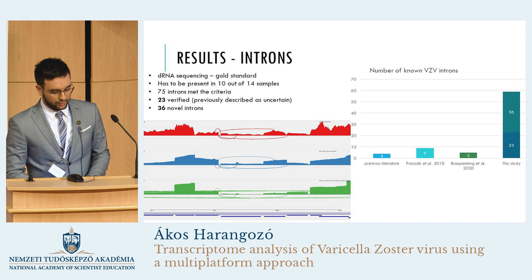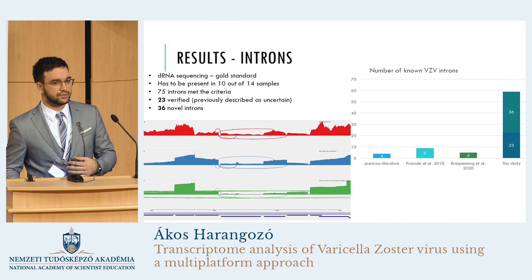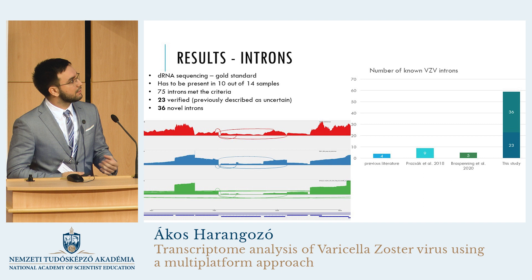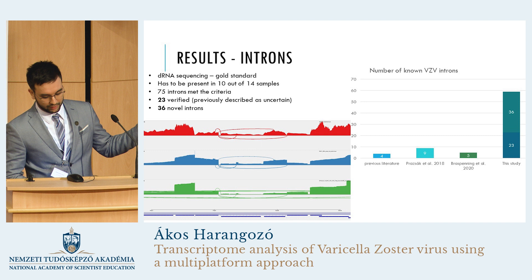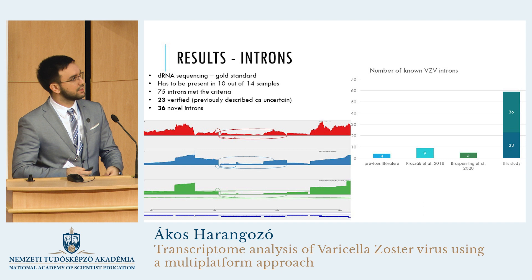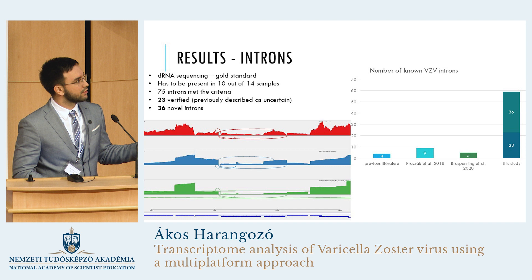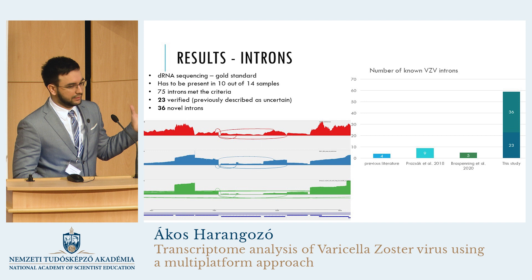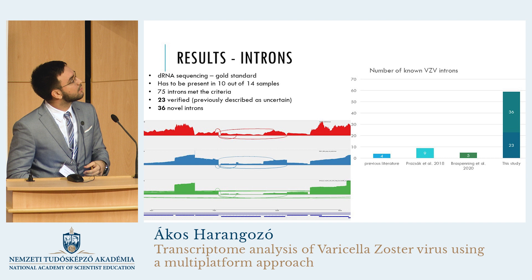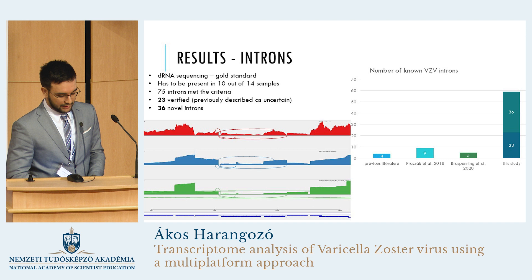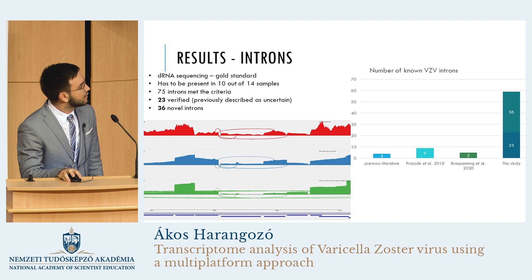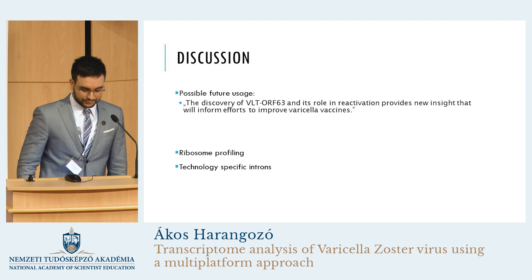Our main results are the new introns. There is a method called direct RNA sequencing, which means that we don't turn our RNA into cDNA, but sequence the RNA itself. It's a bit more complex, but it allows us to have a more sensitive and accurate result, and we used it as a gold standard. Previously, only four VZV introns were known. We had a previous study where we described nine additional ones, and a study two years ago produced five more. Now, in this study, with strict criteria requiring an intron to be present in 10 out of a total of 14 samples, we found 23 that were already described by us as uncertain, which we could now verify, and 36 novel ones that have never been described before. On this graph, you can see a few examples of introns near each other in three different samples — it is a sashimi plot.